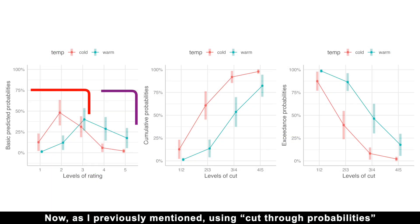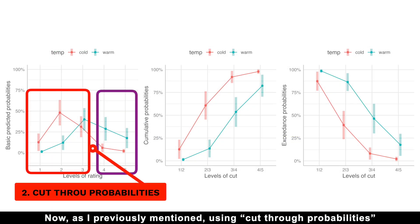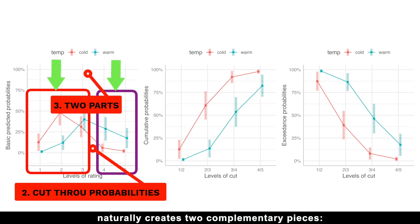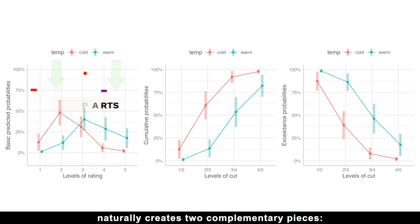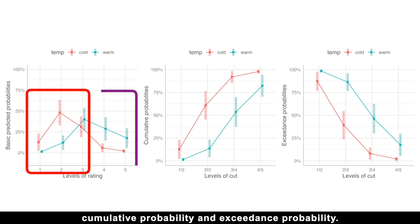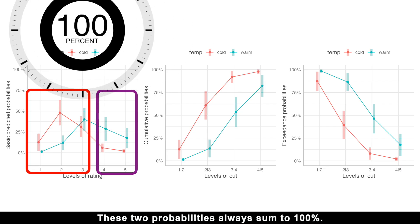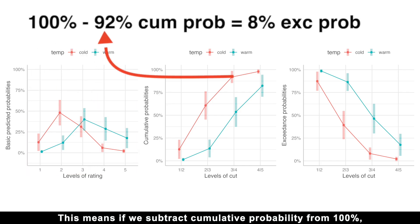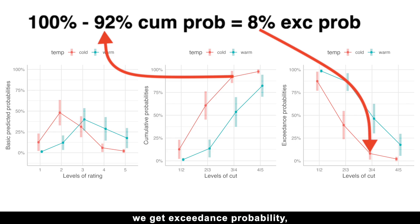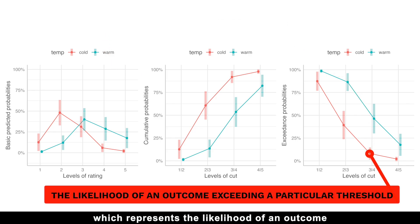Now, as I previously mentioned, using cut-through probabilities naturally creates two complementary pieces: cumulative probability and exceedance probability. These two probabilities always sum to 100%. This means, if we subtract cumulative probability from 100%, we get exceedance probability, which represents the likelihood of an outcome exceeding a particular threshold.